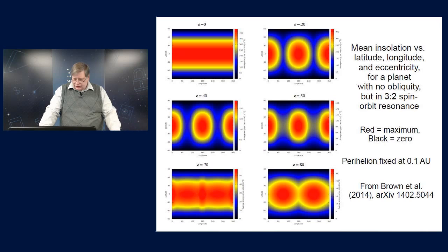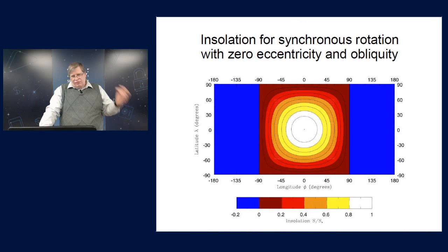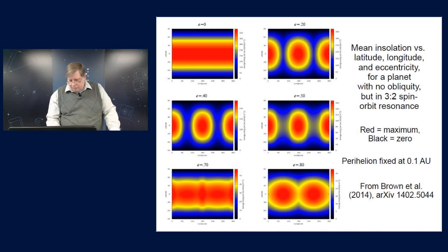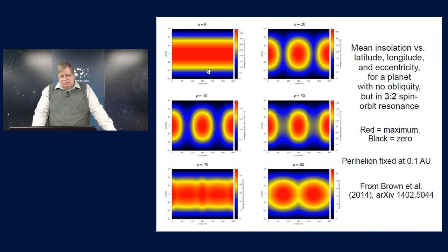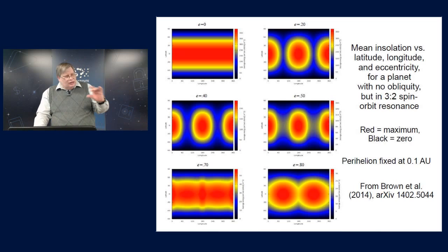Now, again, that's a synchronous resonance, but if you look at the three to two resonance as Mercury is in, we'll see how that behaves as a function of eccentricity. Now this is from Brown et al., and they used a slightly different color scheme than I did, but there are color bars here to help you figure it out. Now for a zero-eccentricity, the insolation pattern, and this is the mean insolation, is pretty much the same as if the planet were not in resonance at all.